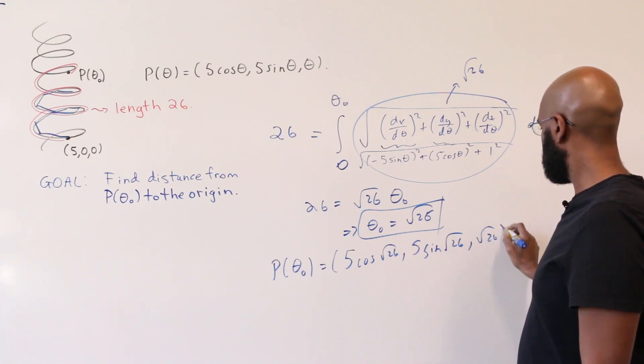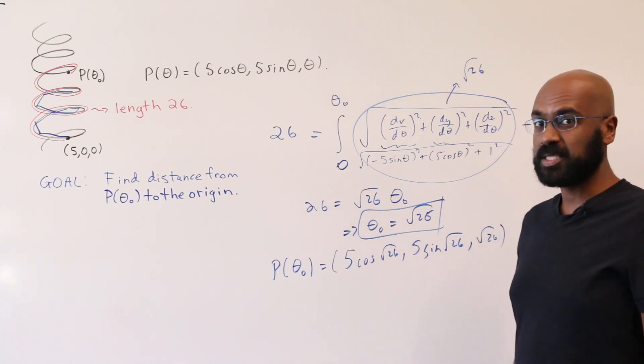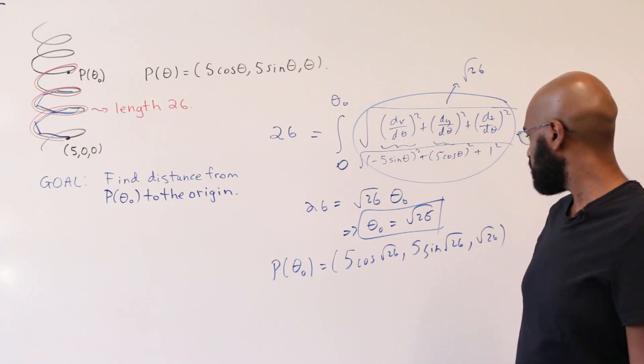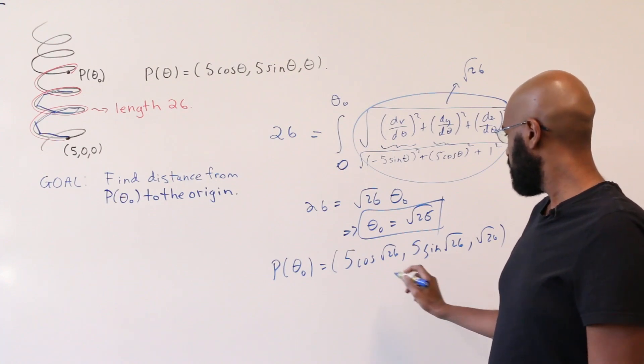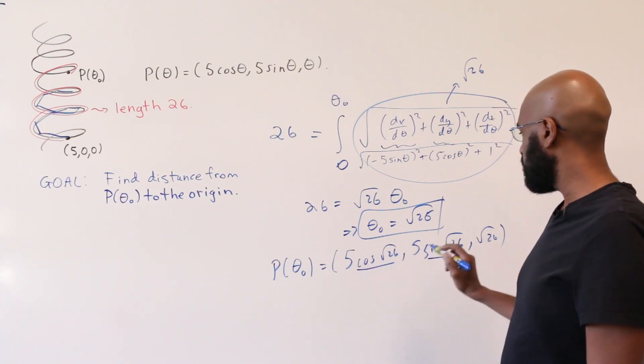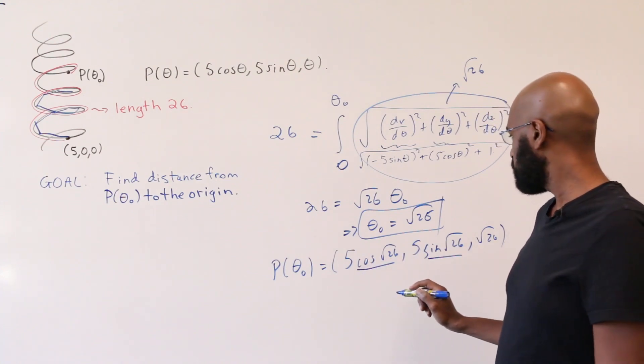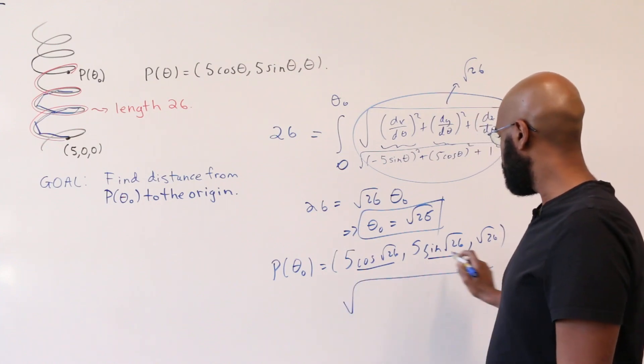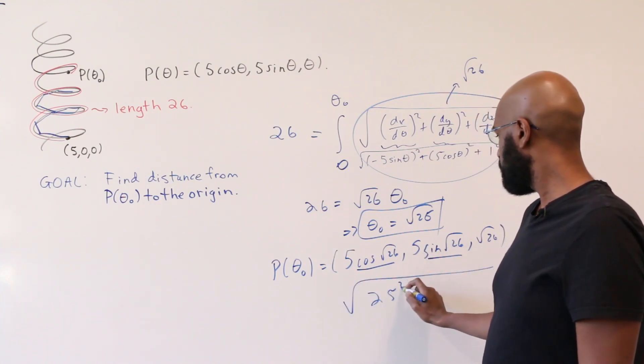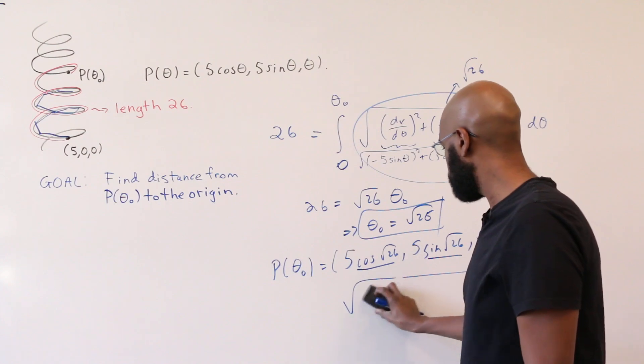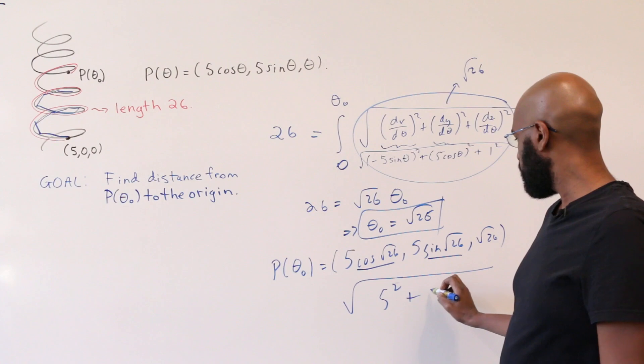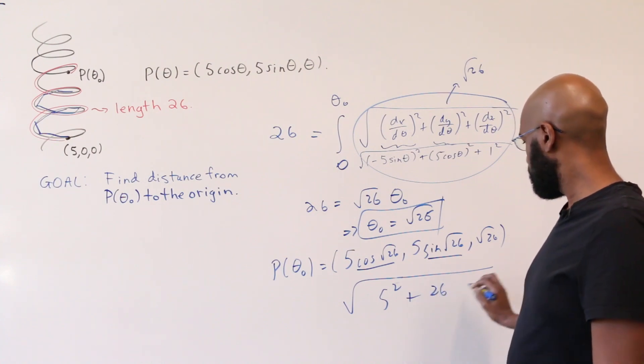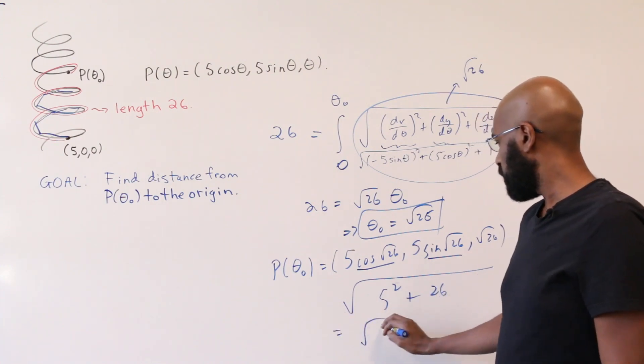And so the question is what the distance between this and the origin is. That is the square root of the sum of the squares of its components. Again, we'll have a cosine squared and sine squared added up, which is one, so this gives us the square root of 5 squared, which is 25, plus (√26)², which is 26, giving us √51.